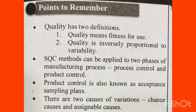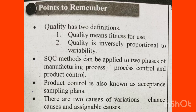Statistical Quality Control methods can be applied to two phases of the manufacturing process — the input, output, and transformation process. We use SQC methods in two phases: process control and product control. Product control is also called Acceptance Sampling Plans.